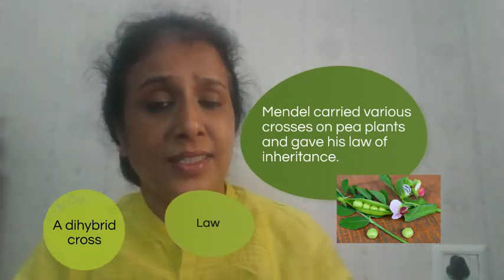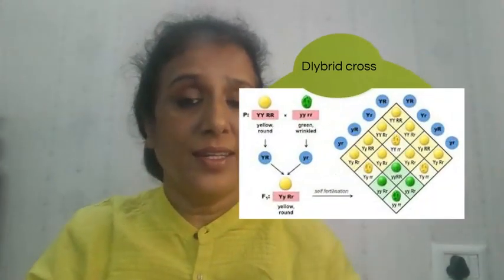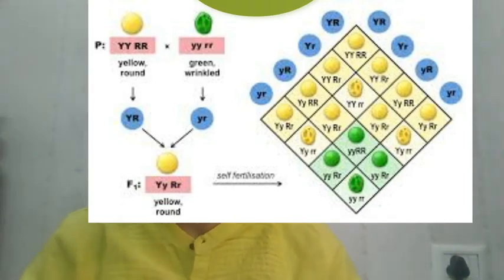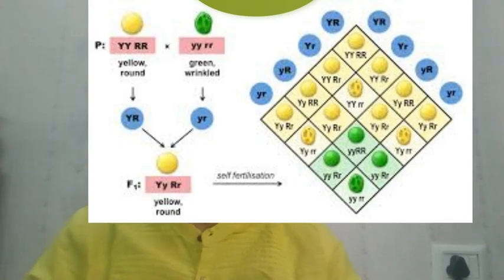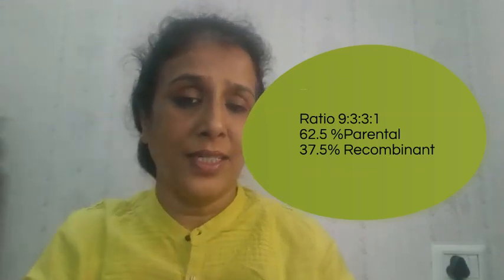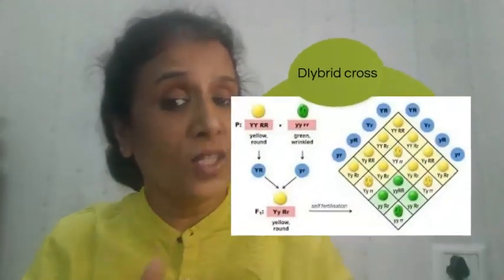Mendel studied various crosses in the pea plant and gave his law of inheritance. In a dihybrid cross on pea plants having yellow colored seed and round shape with green colored seed and wrinkle shape, in the F2 generation he got the ratio 9:3:3:1. The 9 and 1 are the parental type and 3 and 3 are the new combinations. So in terms of percentage, we can say 62.5% parental and 37.5% recombinant.